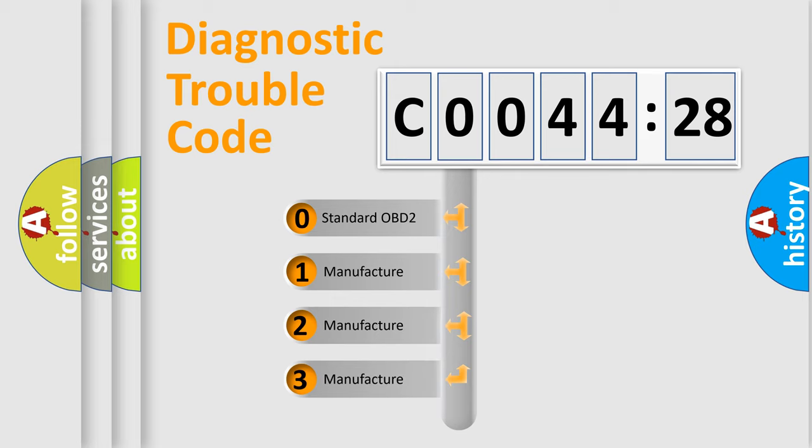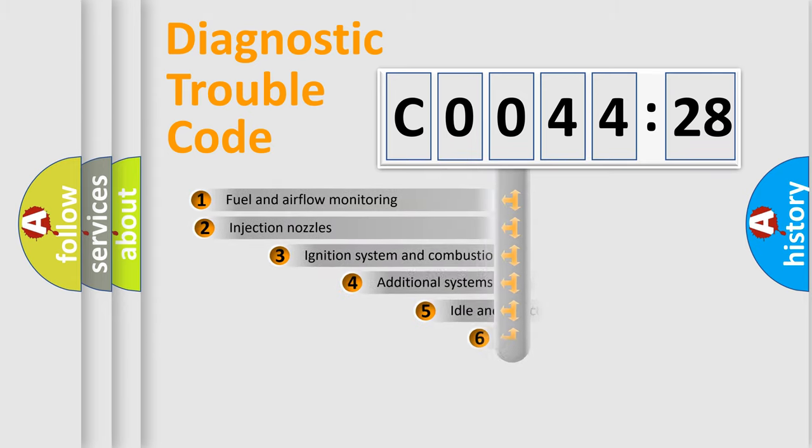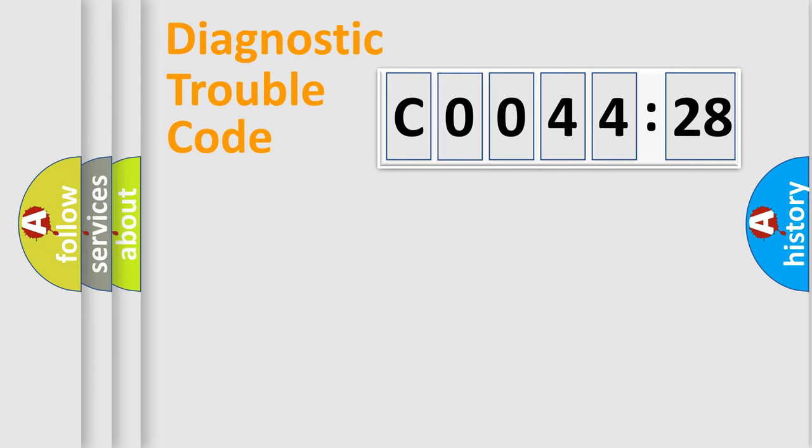If the second character is expressed as zero, it is a standardized error. In the case of numbers 1, 2, 3, it is a more precise expression of the car-specific error. The third character specifies a subset of errors. The distribution shown is valid only for the standardized DTC code. Only the last two characters define the specific fault of the group.